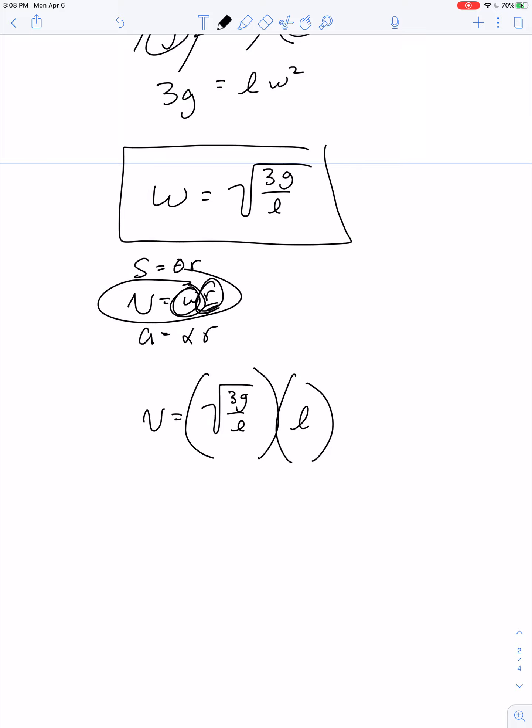So when I put this all together, V is equal to the square root of 3GL, and that's the V of the tip.